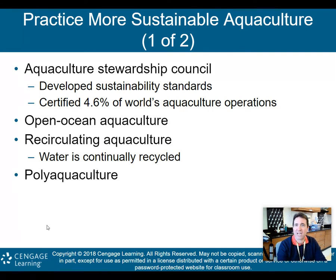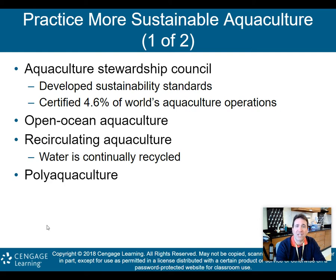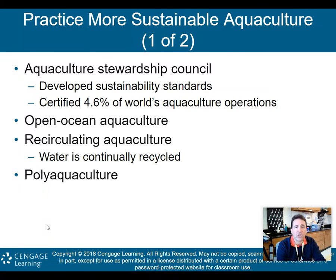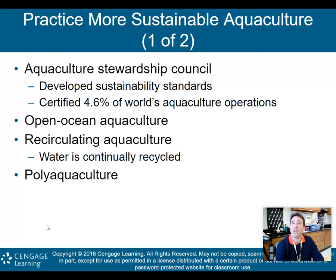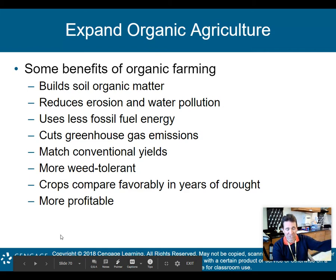Moving on to aquaculture — we should practice more sustainable fish farming. An Agricultural Stewardship Council has developed sustainability standards, but only about 4.5% of the world's aquaculture operations are currently certified as sustainable. Open ocean aquaculture could be more sustainable than coastal operations. Recirculating aquaculture continuously recycles water. Polyaquaculture — growing a number of different aquatic species together rather than just one — is similar to polyagriculture on land and helps sustain biodiversity.